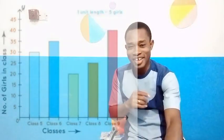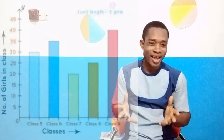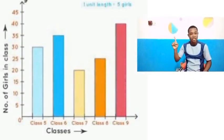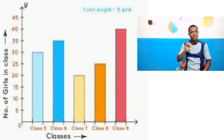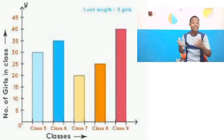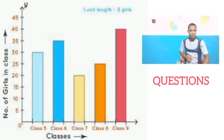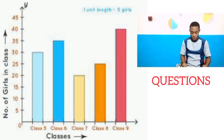We are not going to waste time — this is going to be a fast and sweet class as always. It's going to be an interesting class. We are not going to waste time because we have already learnt a lot on how to collect data, get their frequencies, and how to interpret them. So this bar chart that you have, we are going to use it to answer the following questions. This is just about the number of girls in some classes. Follow along as I read the questions.